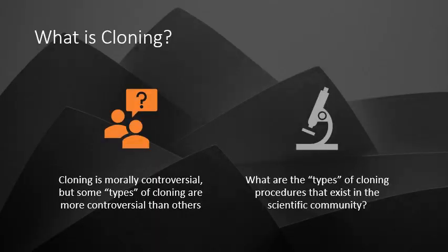Now cloning, or this process of copying biological entities, is morally controversial. But some types of cloning are more controversial than others. So what are the types of cloning procedures that exist in the scientific community, and which ones are more controversial than others?